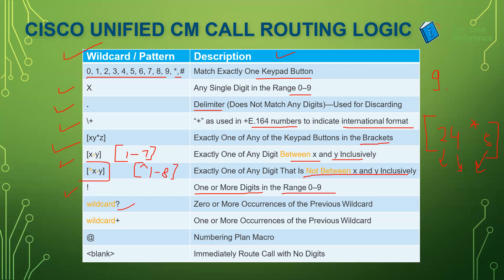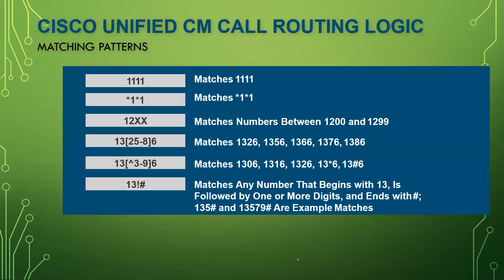The question mark wildcard means zero or more occurrences of the previous wildcard, and plus means one or more occurrences of the previous wildcard — it depends on the particular pattern you are making. The @ symbol means numbering plan macro as discussed earlier. A blank pattern means it will immediately route the call with no digits.